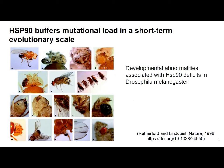Previously, in different organisms, it was shown that Hsp90 can work as a buffer of mutational load. In this figure, you can see an example of such work performed in Drosophila melanogaster, where it was shown that different defects in fly phenotype appear if Hsp90 level is decreased. This is not due to de novo mutations — these defects were present in the genome before, but were hidden by the buffering activity of Hsp90. So when inhibiting Hsp90, these effects became visible.